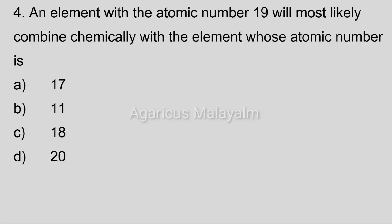Fourth question: An element with the atomic number 19 will most likely combine chemically with the element whose atomic number is. Answer options. Option A: 17. Option B: 11. Option C: 18. Option D: 20. Correct answer: Option A, 17.